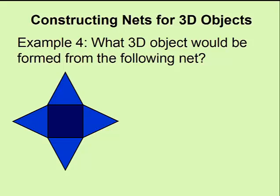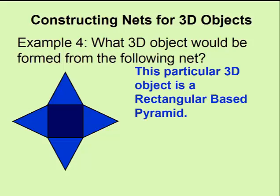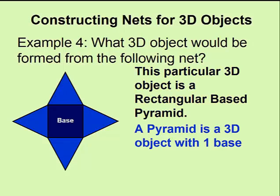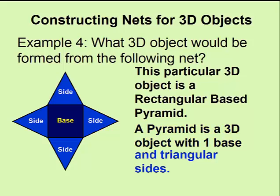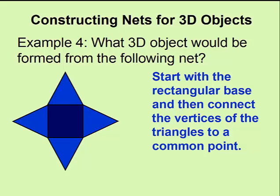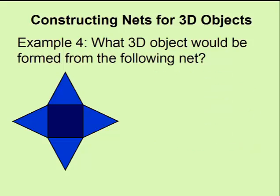What object would be produced from this particular net? This is called a rectangular base pyramid. A pyramid is a three-dimensional object with only one base. A pyramid also has triangular sides. To produce the three-dimensional object from this net, you would begin again with your base and then connect the sides to a common point.